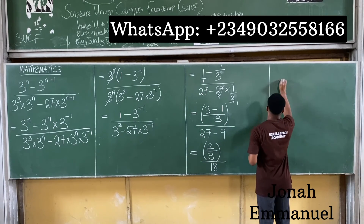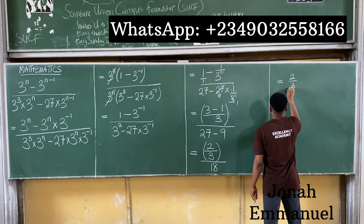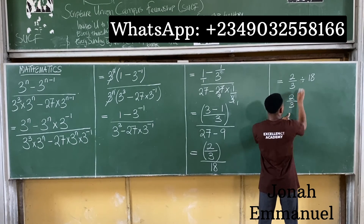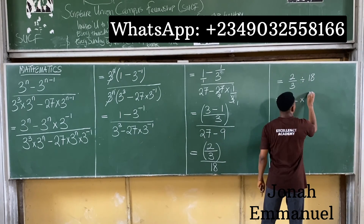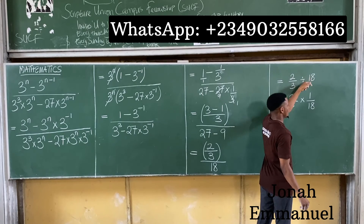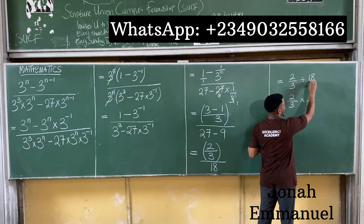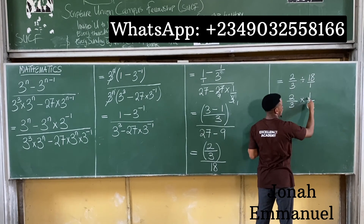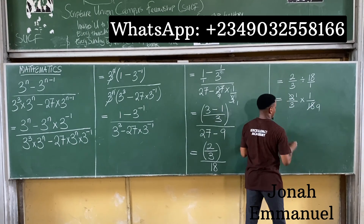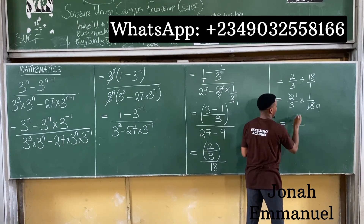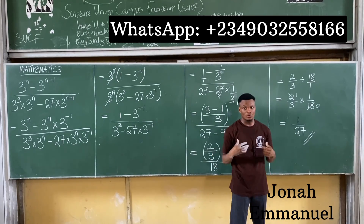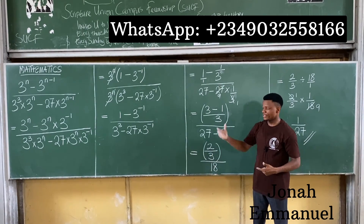This becomes 2 over 3 divided by 18, which equals 2 over 3 times 1 over 18. That is 1 times 1 over 3 times 9, which equals 1 over 27. So the final answer is 1 over 27. This is how we solve this problem.